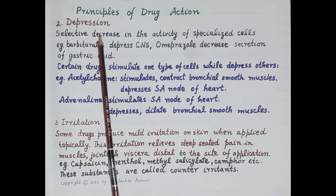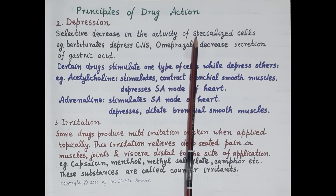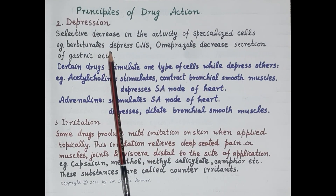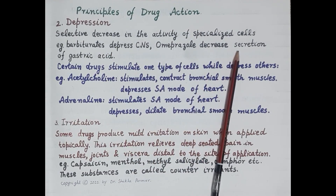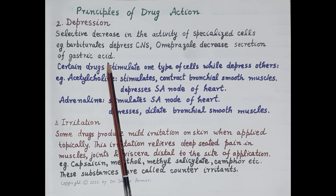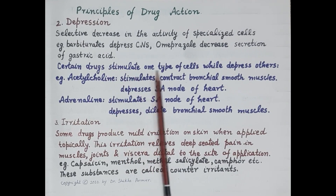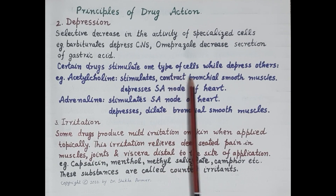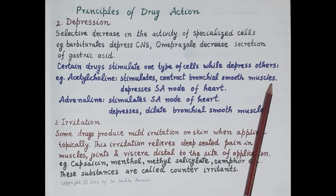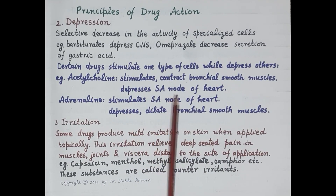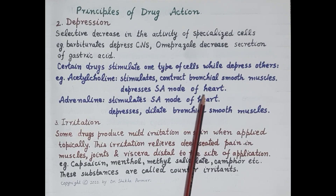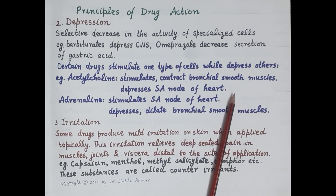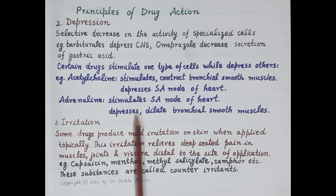The second type of drug action is depression — selective decrease in the activity of specialized cells. For example, barbiturates depress the central nervous system, and omeprazole decreases secretion of gastric acid. Certain drugs stimulate one type of cell while depressing others. For example, acetylcholine stimulates and contracts bronchial smooth muscles, but depresses the sinoatrial node of the heart, reducing heart rate. Adrenaline stimulates the sinoatrial node increasing heart rate, while it depresses and dilates bronchial smooth muscles, making it useful in asthma management.